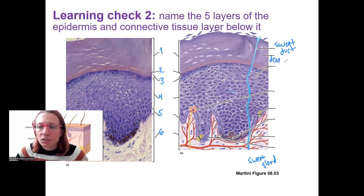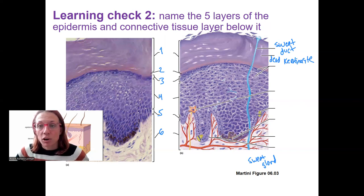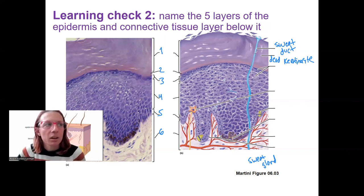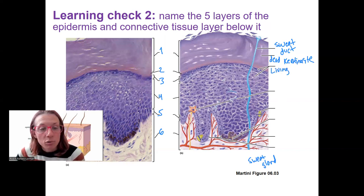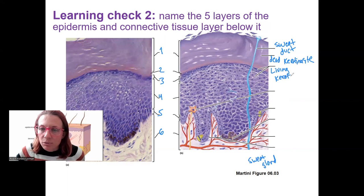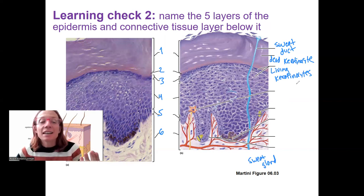This arrow is pointing to dead keratinocytes. A keratinocyte is a cell that produces keratin — the suffix '-cyte' means cell, so keratin-producing cell. They're dead above the stratum granulosum — you can see dead pieces of cell filled with keratin falling off up here. Living keratinocytes are below the stratum granulosum. They die in the stratum granulosum. Keratinocytes are the squamous cells of the epithelium.